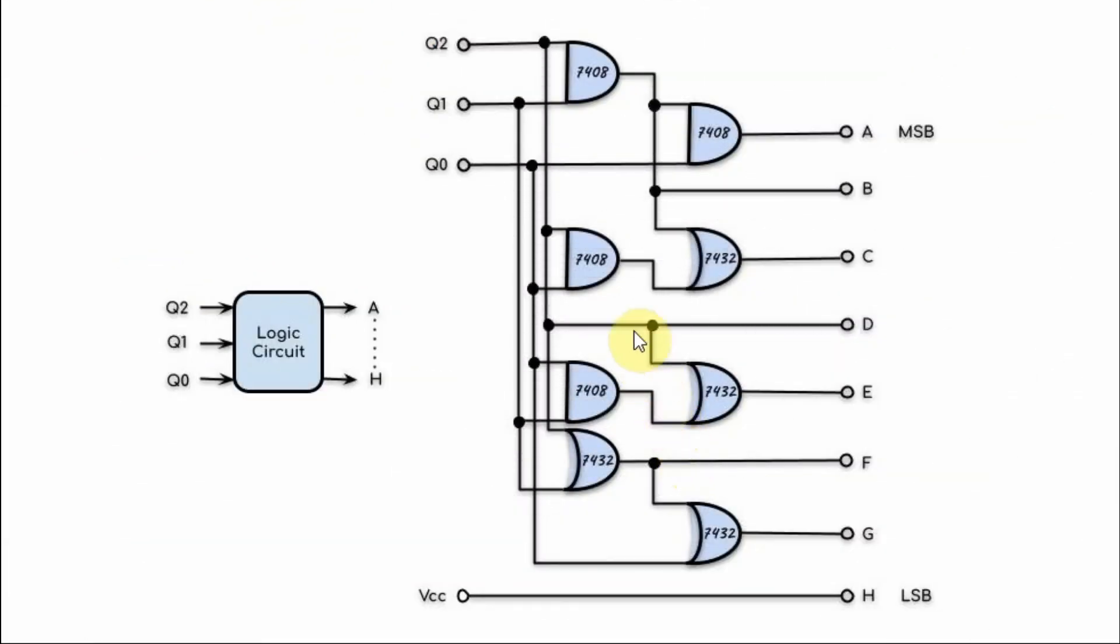Next, we translate the Boolean expressions into a logic circuit using AND and OR gates as you can see here. This would be the input to give us the 8-bit output. This would be the most significant bit, and this would be the least significant bit.